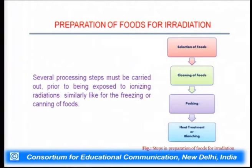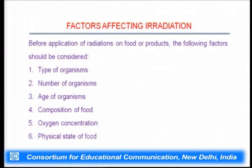What is the exact processing required for food irradiation? Initially, food is selected and cleaned, then packed in a container or wrapper, followed by heat treatment or blanching, and then the irradiation process. Before subjecting food to irradiation, important factors must be considered: type of organisms present in the food, number of organisms, age of organisms, composition of food, oxygen concentration, and physical state of food.